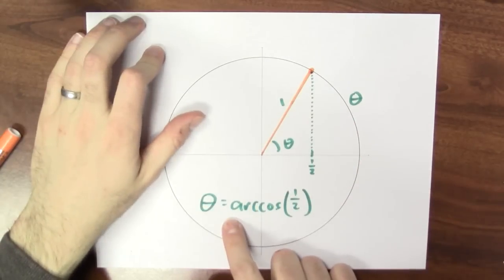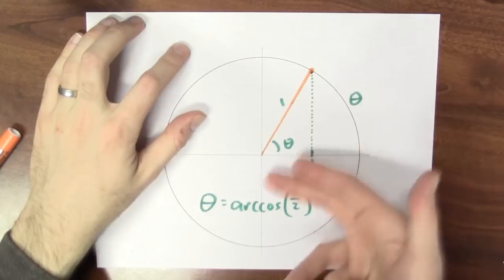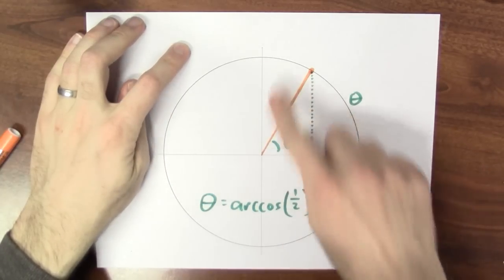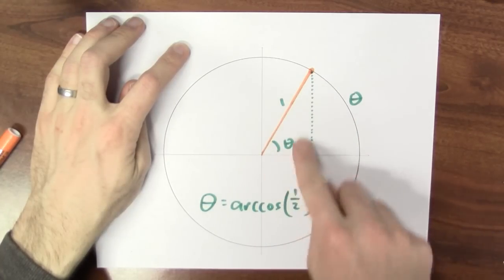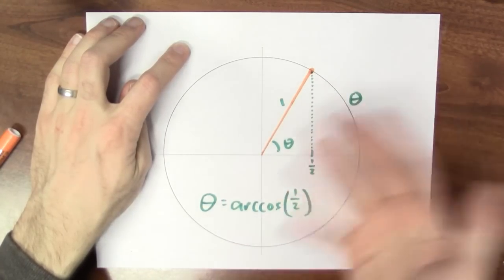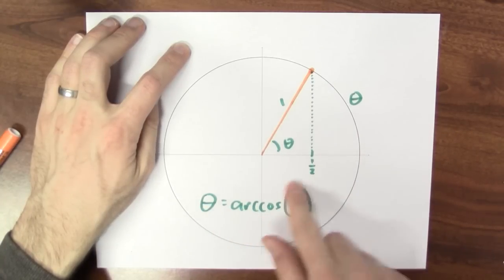Note that I'm calling these inverse trig functions arc whatever. You know, arccosine, arcsine. One reason to call these things arccosine or arc whatever is because of radian measure. If this is a unit circle, then the length of this arc is the same as the measure of this angle in radians. That's the definition of radians. So to say that θ is arccosine 1 half is just to say that θ is the length of the arc whose cosine is 1 half.